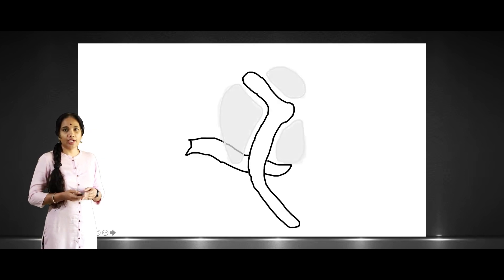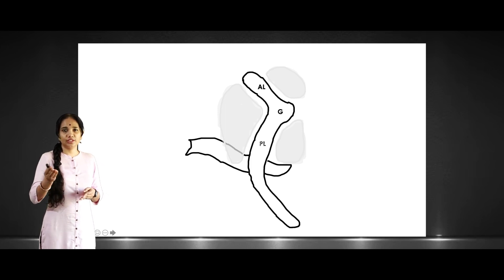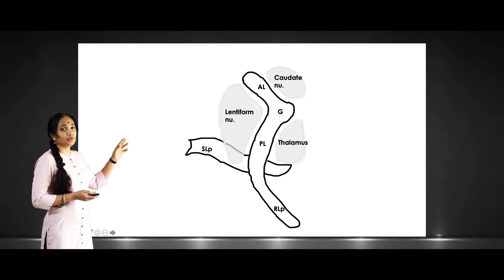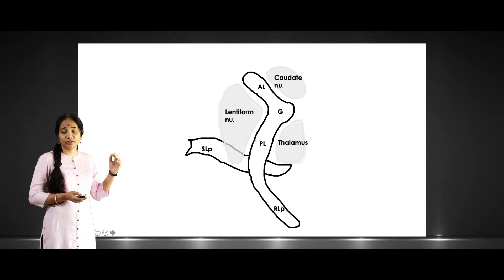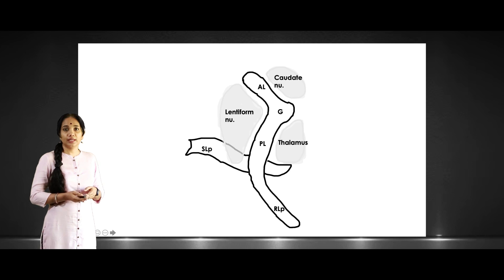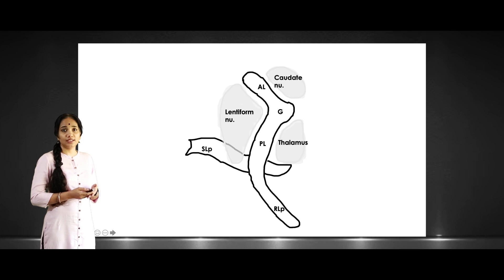Here we have an outline of the internal capsule: the anterior limb, the genu, the posterior limb, the retrolentiform part, and the sublentiform part, as well as their relations. The anterior limb lies between the head of the caudate nucleus and the lentiform nucleus. The posterior limb lies between the thalamus and the lentiform nucleus, with the retrolentiform part extending backwards, and the sublentiform part underneath the lentiform nucleus.